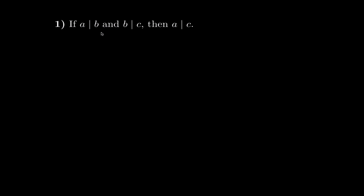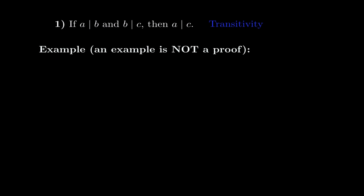Let's start with some examples. The first example illustrates Property 1, which I called transitivity. You can see why it is called that: a divides b, b divides c, so a divides c — you can skip the b.